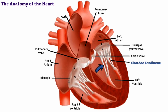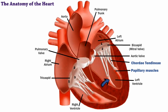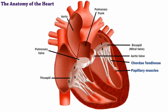Chordae tendineae are attached to the papillary muscles, which are located in the ventricles. When these muscles contract, the white, string-like chordae tendineae become taut. It is these chordae tendineae together with the papillary muscles that keep the valves shut when the ventricle contracts.